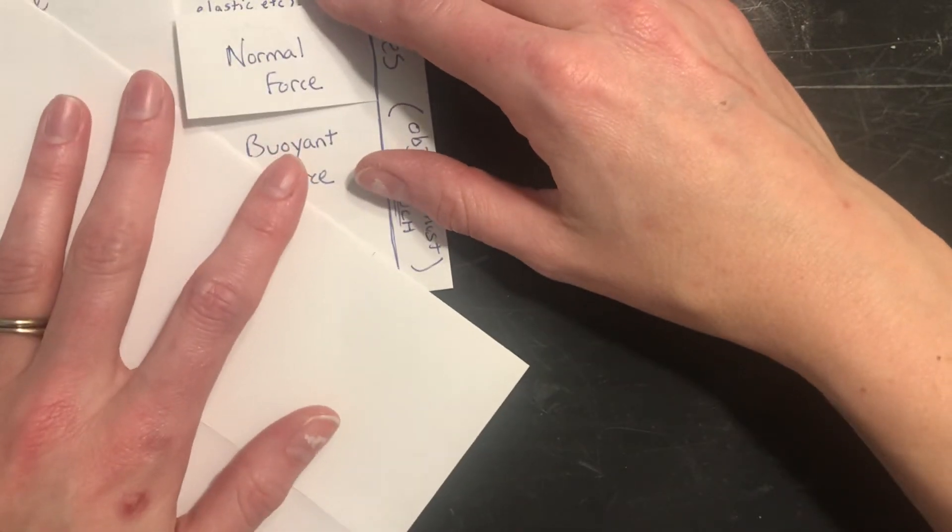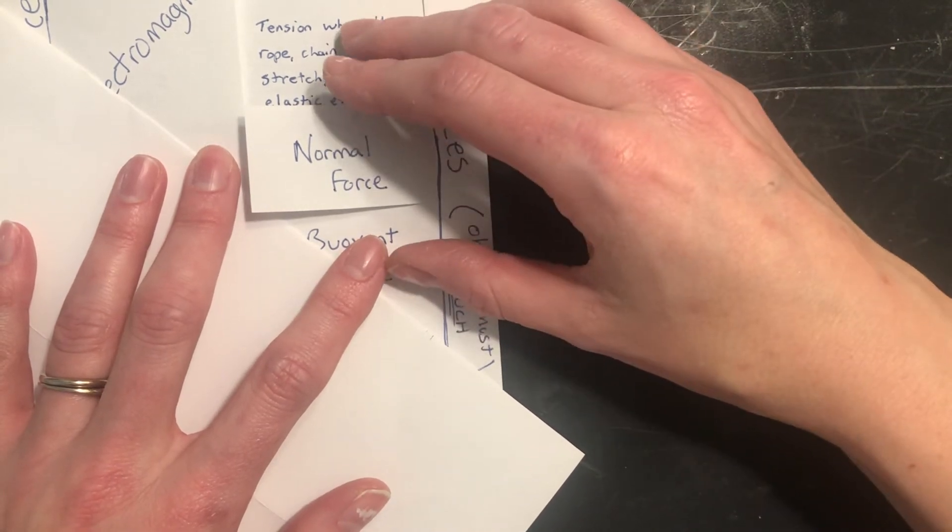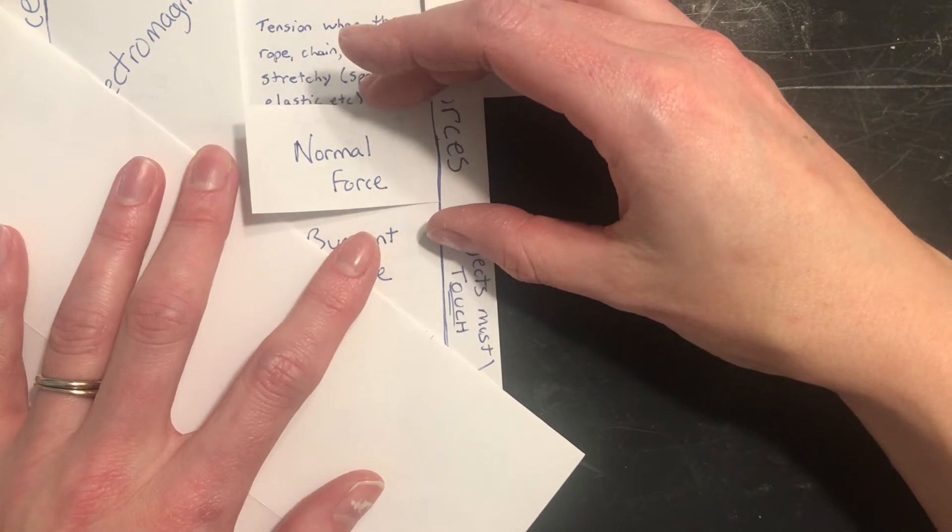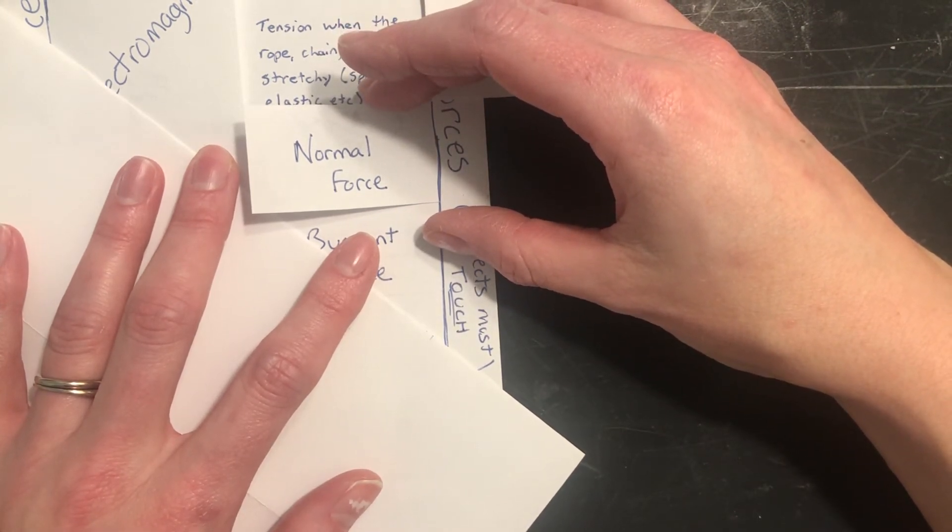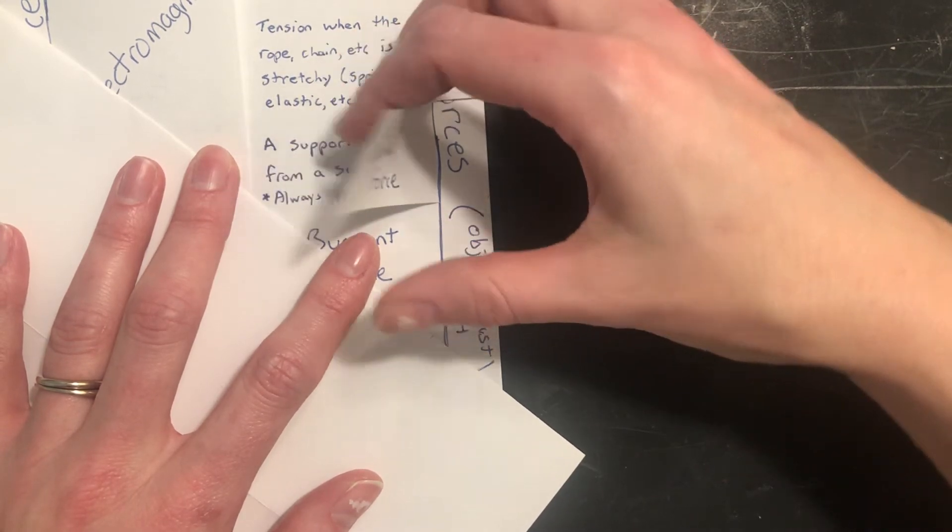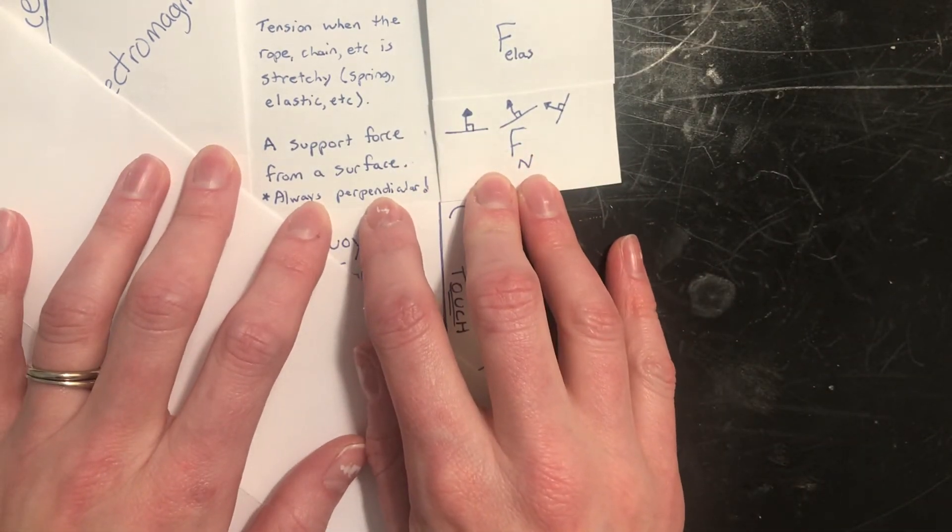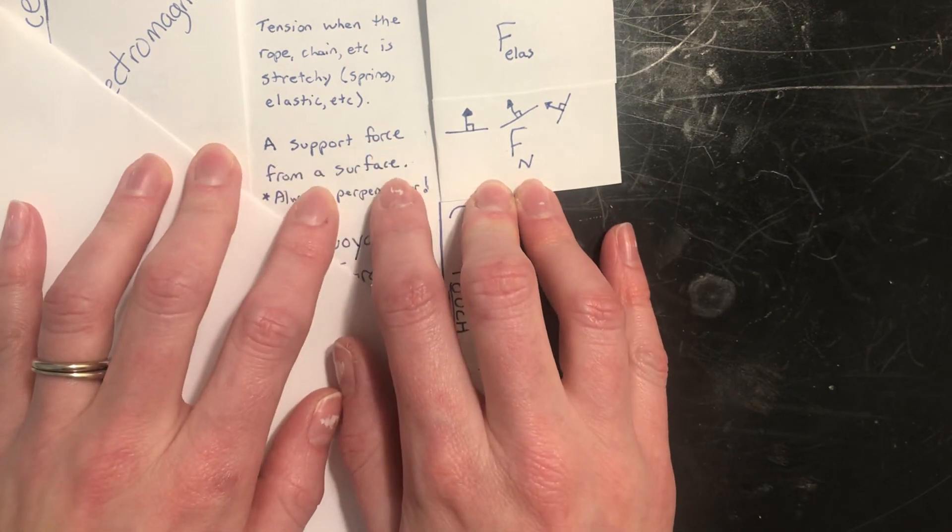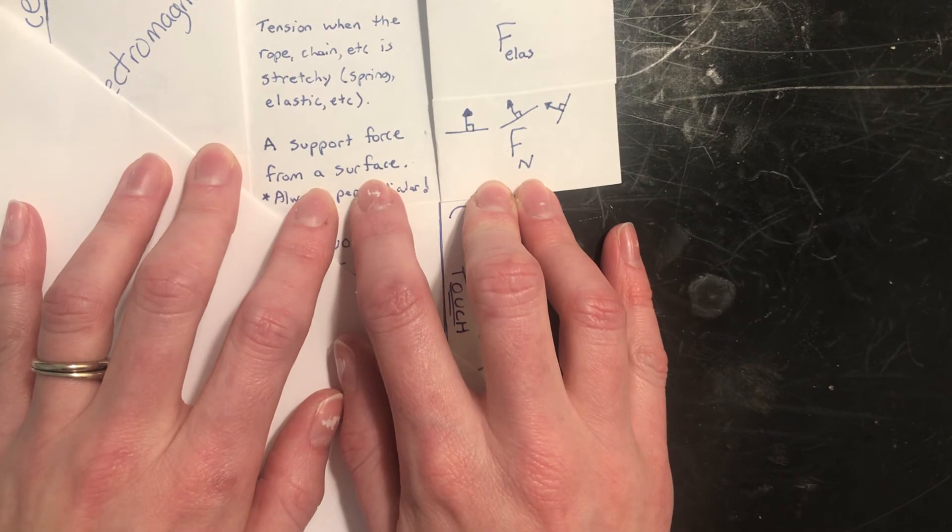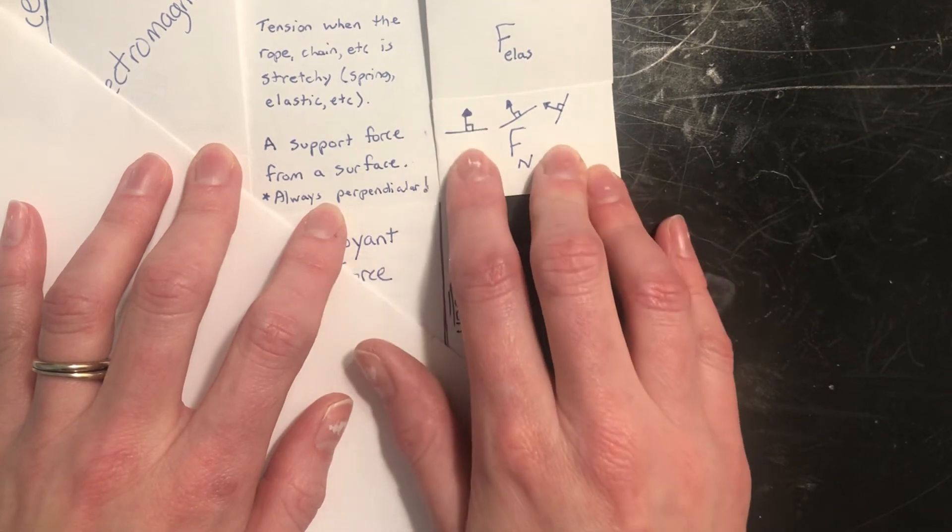The next one is normal force. Normal forces are not called normal because they're always there. I mean, sometimes they kind of seem like they're always there. They're called normal forces because the word normal in math, upper level math, you might not have come across this yet in your math classes, but normal means perpendicular. And a normal force is always perpendicular, that's why it's called a normal force. It's a support force from a surface. So if you're seated right now, or standing, the floor or the chair is holding you up, and it's pushing up against the floor, against you like this, so it's pushing up, perpendicular.